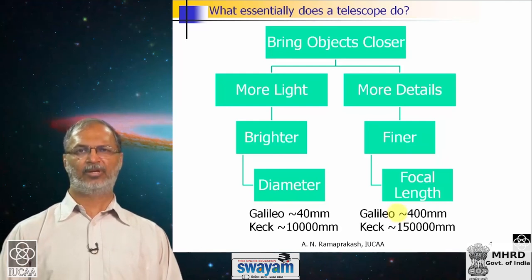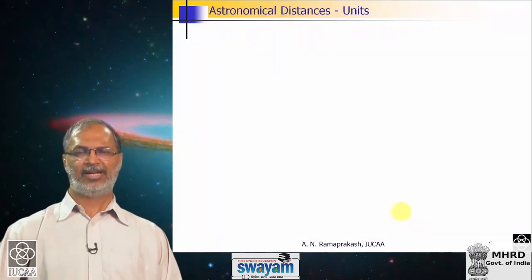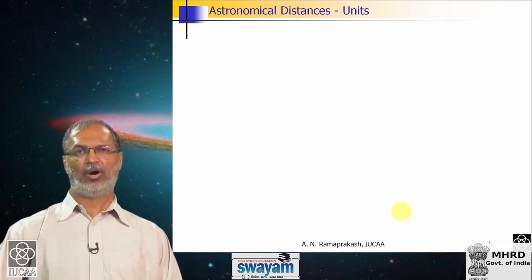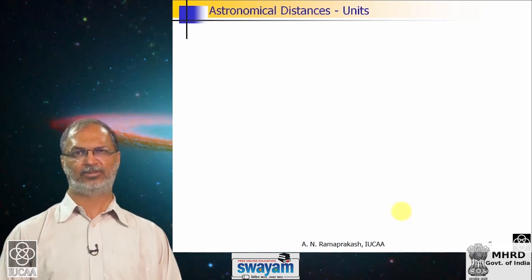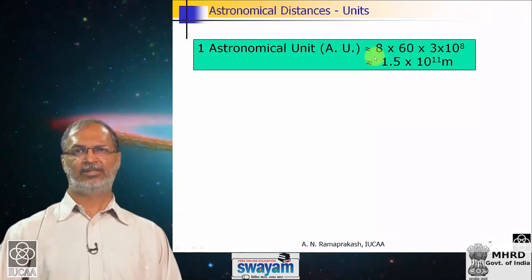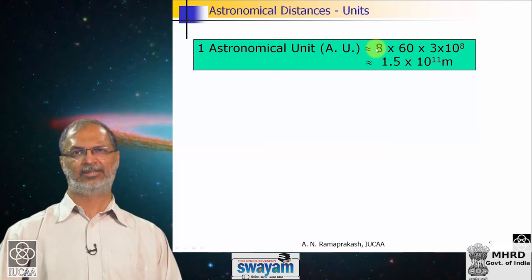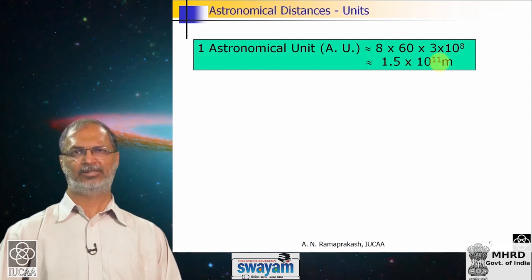Let us try to understand what kind of distances we are talking about in astronomy, because we said that telescopes bring objects closer. Earth is at a distance from the sun such that it takes about 8 minutes for light to reach Earth. So 8 minutes times 60 gives 480 seconds multiplied by the speed of light gives about 1.5 × 10¹¹ meters as the typical distance between Earth and Sun. This distance is called an astronomical unit — 1 AU — and it is about 1.5 × 10¹¹ meters. You can already see that this is an enormously large distance.